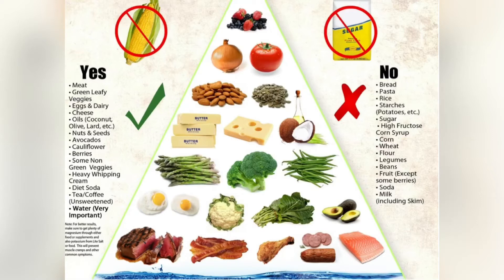Foods that you should eat if you're going on a keto diet are meat, green leafy vegetables, eggs, dairy, cheese, bacon — everything in this picture. Things you should avoid include bread, pasta, rice, anything that is high in starch or sugar.